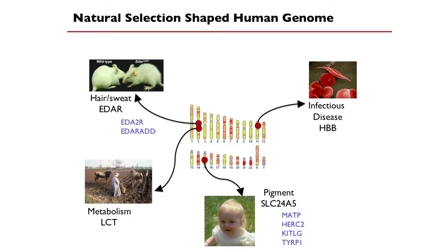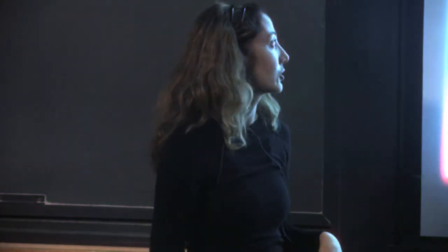Interestingly, not just that gene but other genes in that pathway are also our top signals — EDAR and EDARADD both emerge. So we're seeing another pathway: hair, sweat, and teeth as things that might be driven by evolution.